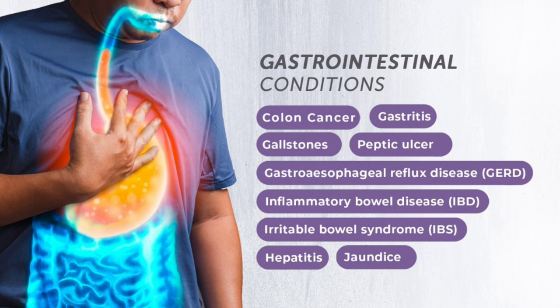Zenker's diverticulum is a pharyngeal pouch. Patients present with dysphagia, bad-smelling regurgitation of fluid, and chronic cough. A gurgling sound in the chest when drinking is an important sign. Investigation of choice is barium swallow. Key features: gurgling sound, repeated chest infections, and bad smell after eating — this is the pharyngeal pouch.